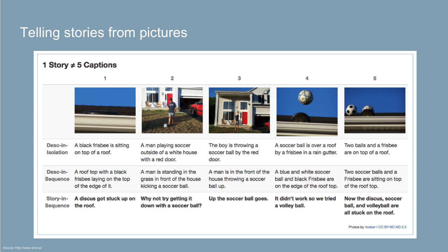If algorithms are already better than humans at recognizing what's in a picture, what's the next frontier? Researchers are now working on looking at a sequence of pictures and reconstructing the narrative that ties them together. For example: a series of images shows someone with a Frisbee stuck on a roof, who tries to kick a soccer ball up to dislodge it — resulting in both the ball and Frisbee stuck. The AI must reconstruct that cause-and-effect narrative, not just identify individual objects.